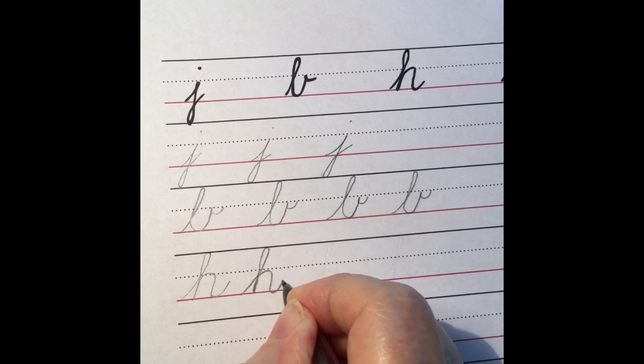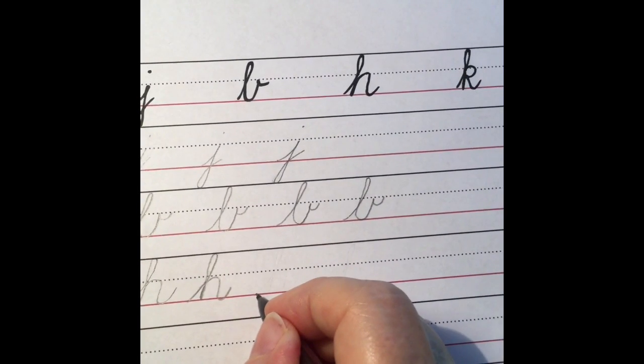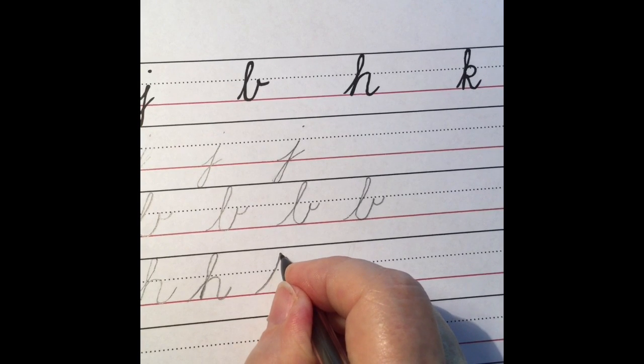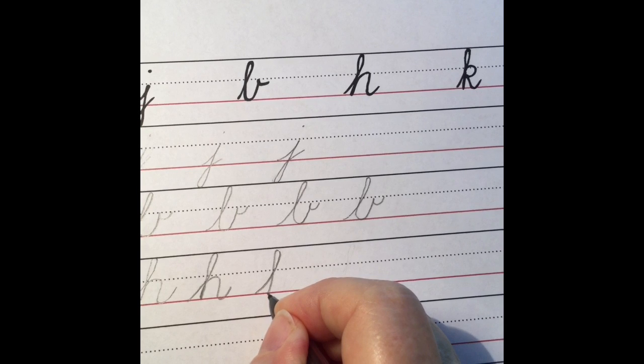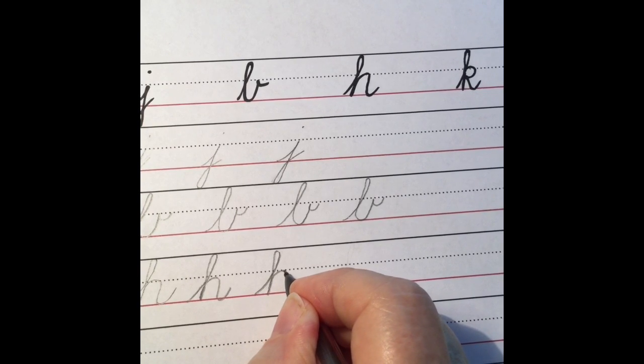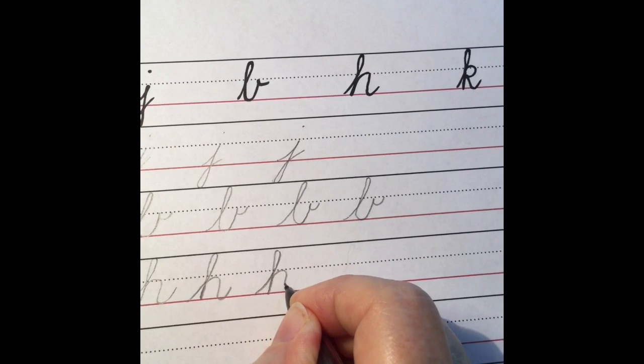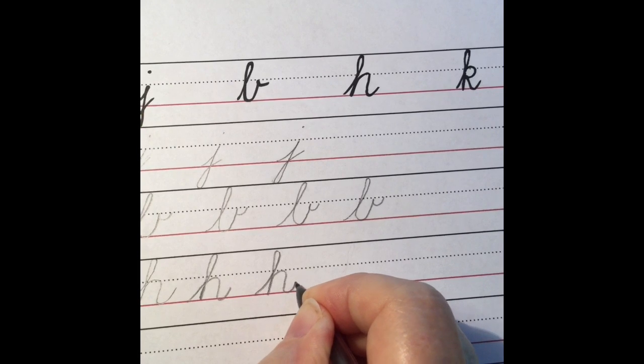So we have a two-space loop, slant, trace up the slant with an overcurve, slant, undercurve.